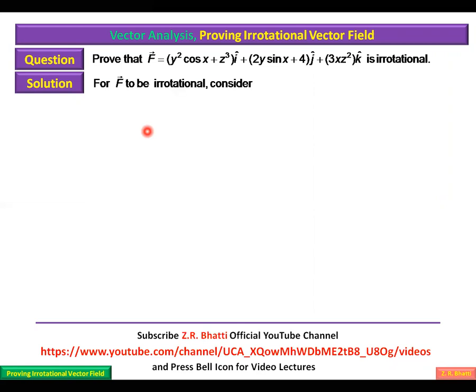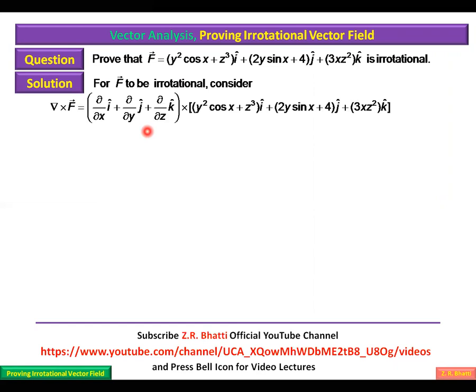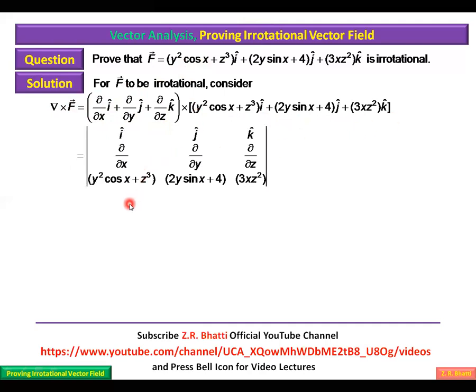To prove F is irrotational, we consider del × F. The del operator is (∂/∂x) i + (∂/∂y) j + (∂/∂z) k, and F has components: (y² cos x + z³) i + (2y sin x + 4) j + (3xz²) k.